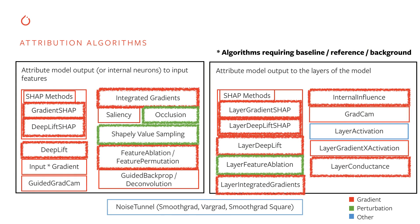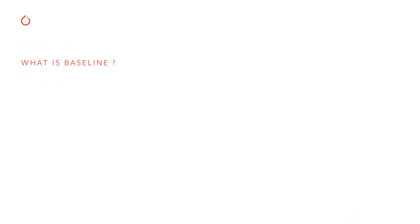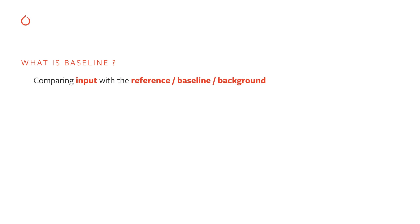Most algorithms also require a so-called baseline, also known as reference or background in the literature. Baseline is an important concept in the world of attributions. Oftentimes when we want to understand what properties characterize a certain object best, we compare it with other objects and seek for differences and contrast. Baseline or reference is based on that concept — it helps us blame particular parts of our inputs for a prediction based on comparison with the reference.